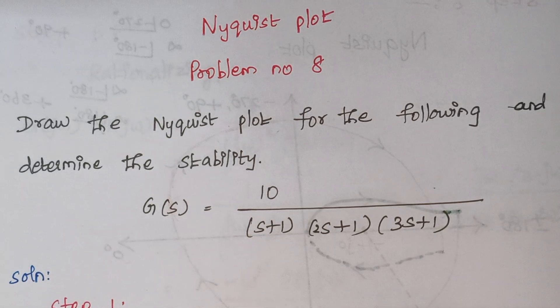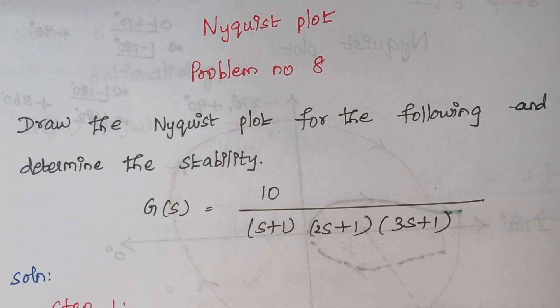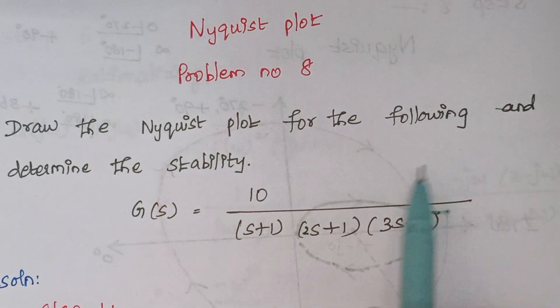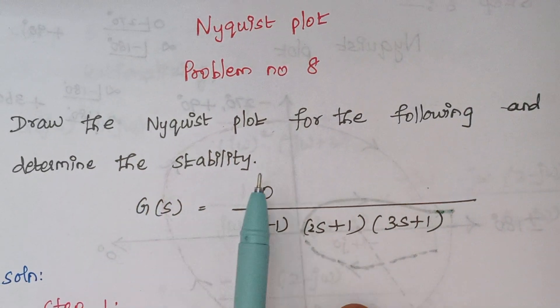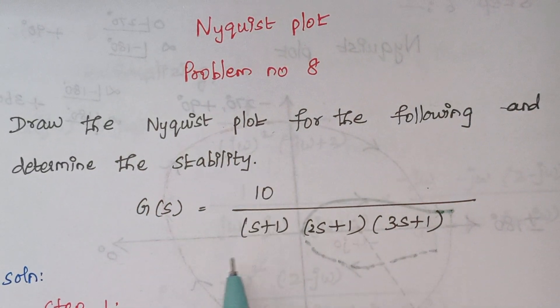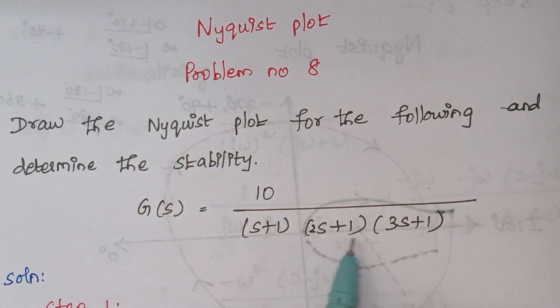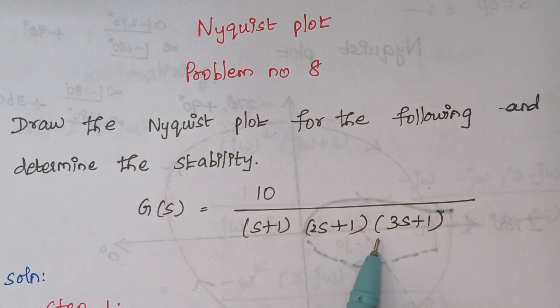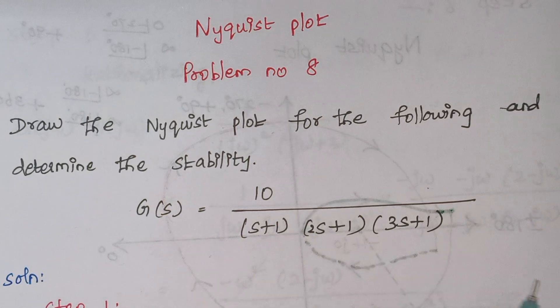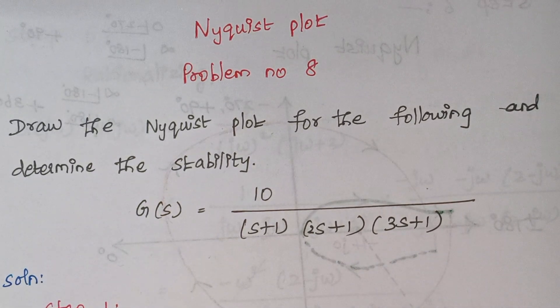The problem is: draw the Nyquist plot for the following and determine the stability. So this is our given transfer function. The first step is,